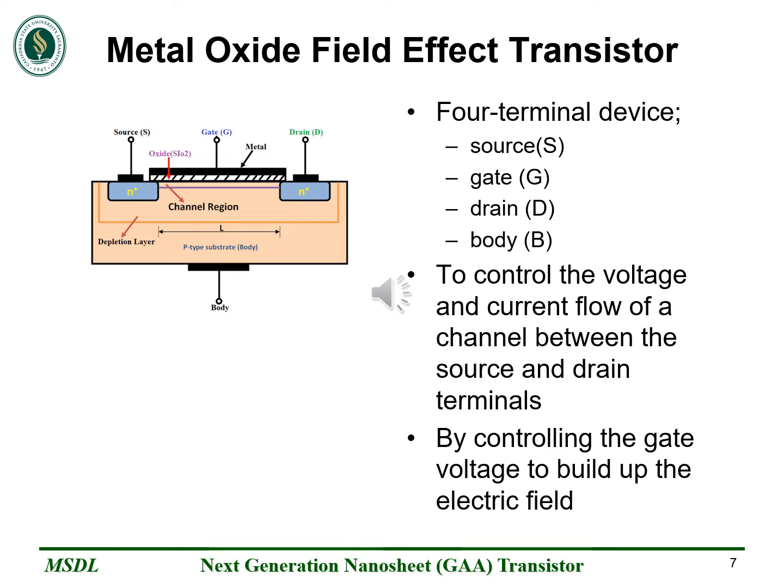Before we dive into geometry design, let's see the working principle of the voltage-controlled Metal Oxide Semiconductor Field Effect Transistor, MOSFET. The main principle of a MOSFET device is to control the voltage and current flow of a channel between the source and drain terminals. The width of this channel is controlled by the electric field established by the gate voltage.